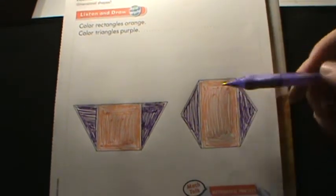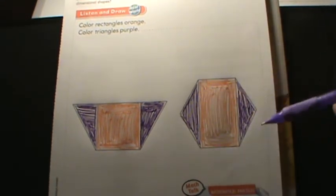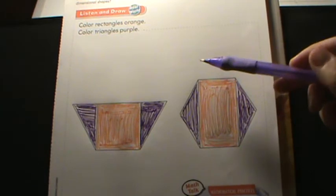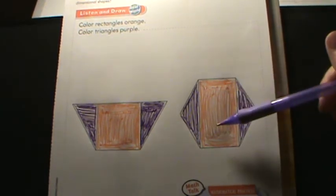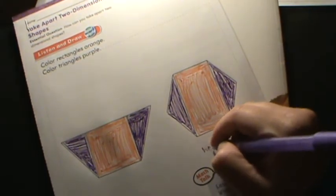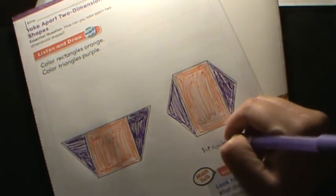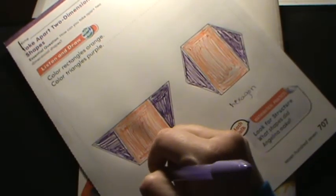And our triangles are going to be purple. So this time, when she put the rectangle and the triangles together, she made a what? Right, she made a hexagon this time. So this one made a hexagon, this one made a trapezoid.